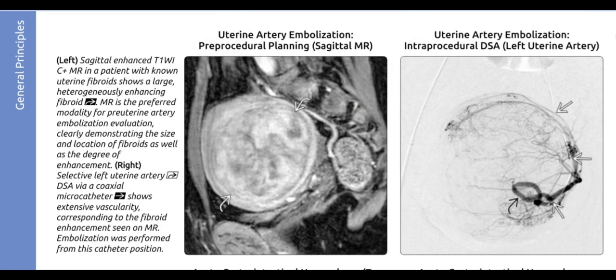Pre-procedural enhanced T1-weighted MRI in a patient with uterine fibroids shows a large heterogeneously enhancing fibroid. MRI is the preferred modality for pre-uterine artery embolization evaluation, clearly demonstrating the size and location of fibroids as well as the degree of enhancement. Selective left uterine artery DSA via a coaxial microcatheter shows extensive vascularity corresponding to the fibroid enhancement seen on MRI; embolization was performed from this catheter position.